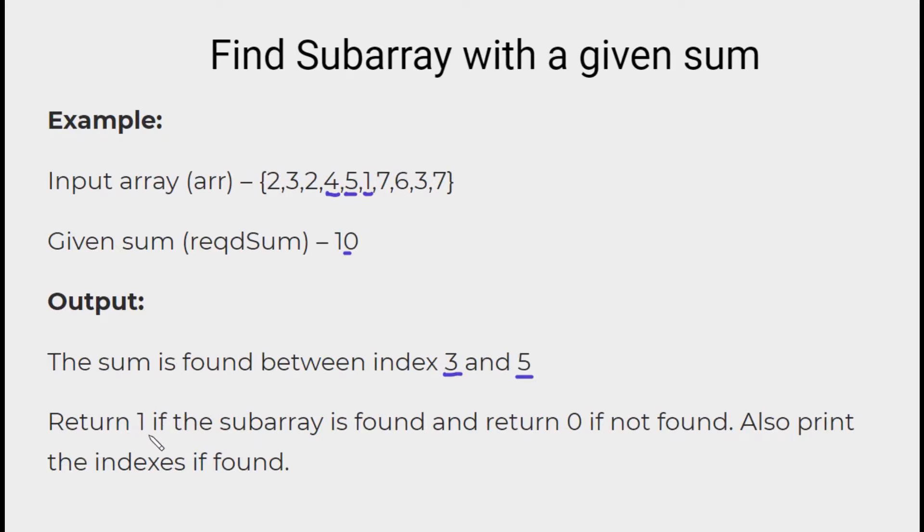Between these indexes, we are able to find the given sum. The function that we write should return 1 if the subarray is found, and return 0 if not.